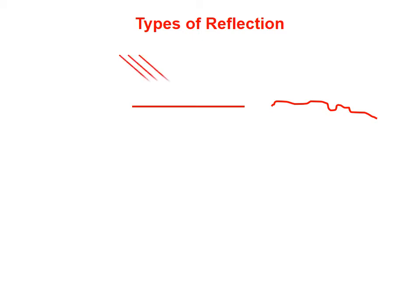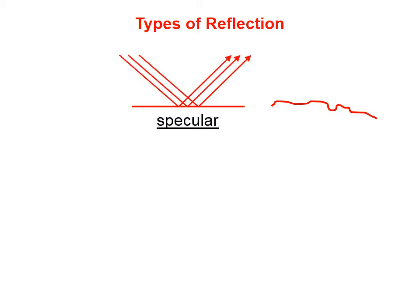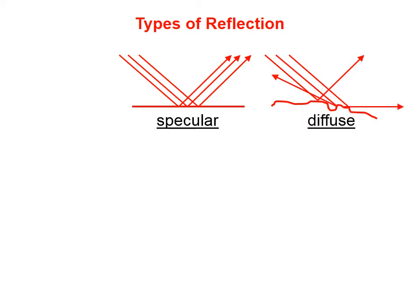There are two types of reflection: specular and diffuse. In specular reflection, incident rays that are parallel remain parallel when reflected. In diffuse reflection, incident rays that are parallel do not remain parallel when they're reflected.